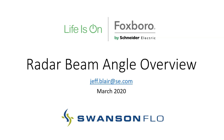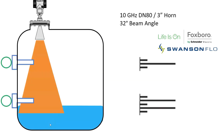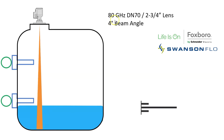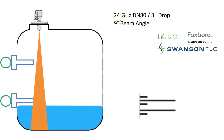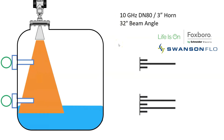Hi, this is Jeff Blair with Schneider Electric. I'll provide a brief overview of radar beam angles. When you look at the market today, I see three primary frequencies of radar: 10 gigahertz, 24 gigahertz, and 80 gigahertz. These may fluctuate a little — 77 gigahertz, 26 gigahertz, 8 to 12 gigahertz — but for general purposes, there are three different frequencies of radar.